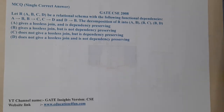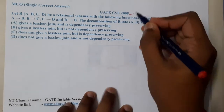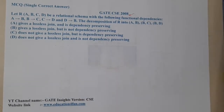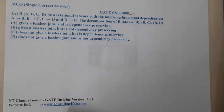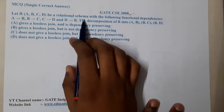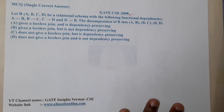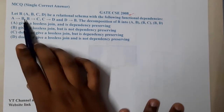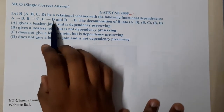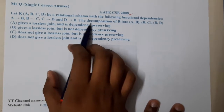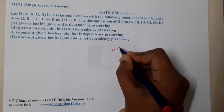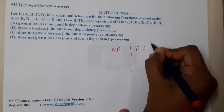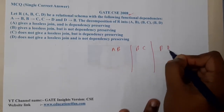Hello guys, we are back with our next lecture. This question belongs to GATE CSC 2008. The given question is: let R(a, b, c, d) be a relational schema with the following functional dependencies: a→b, b→c, c→d, d→b. The decomposition is done into AB, BC, and BD.